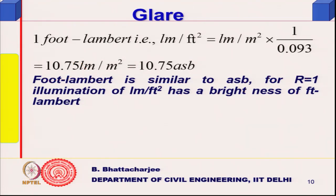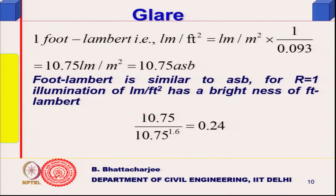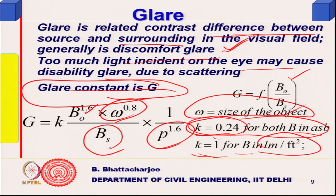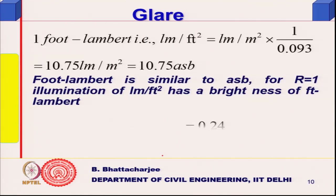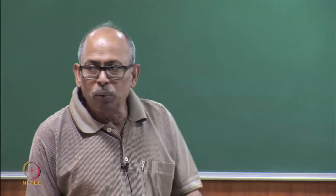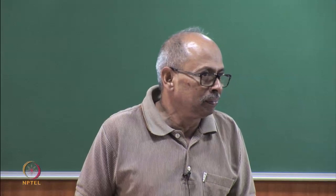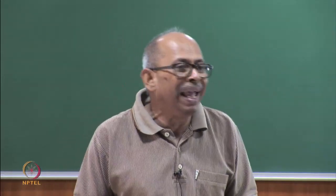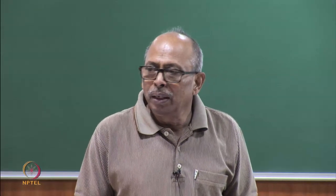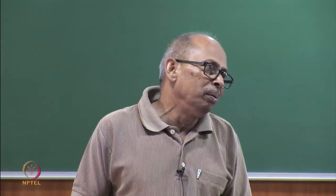Foot Lambert is similar to ASB for reflectance r equals 1, illumination of lumen per feet square, brightness of foot Lambert. In the glare formula B₀, there was a power of 1.6. Taking 10.75 to the power 1.6 gives 0.24. So when using SP 41 or some codes, they write k equals 0.24. k is 1 for lumen per feet square and k is 0.24 for lumen per meter square.